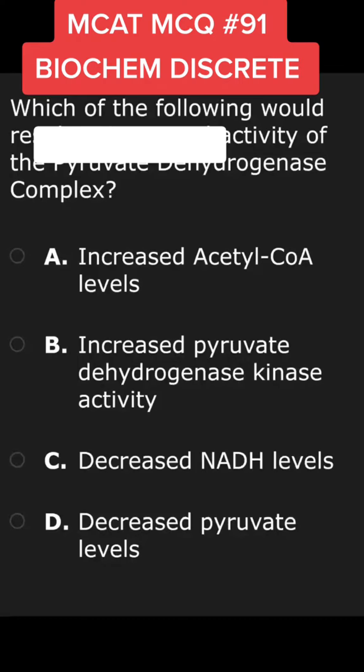Circling back to the answer choices, we're looking for something that's going to increase the activity of the pyruvate dehydrogenase complex. When you have decreased NADH levels, your body is going to compensate by triggering metabolic pathways that will increase NADH, because you're already lacking it. Therefore, when you have a decrease in NADH levels, your body will want to increase the activity of the pyruvate dehydrogenase complex, because it catalyzes a very important intermediate for the Krebs cycle, which will produce NADH. So that's why C is the best answer.